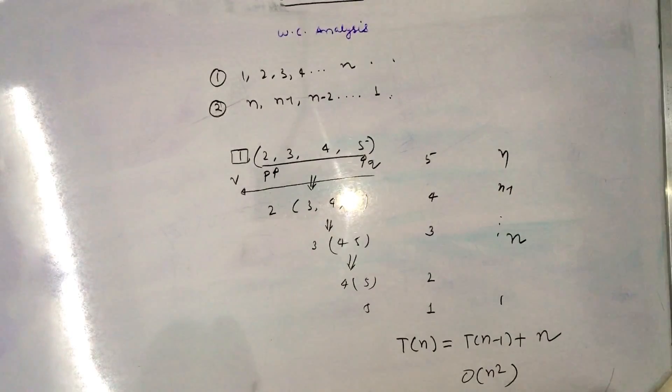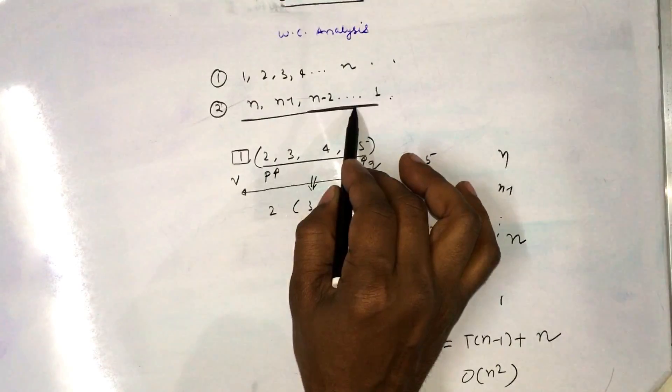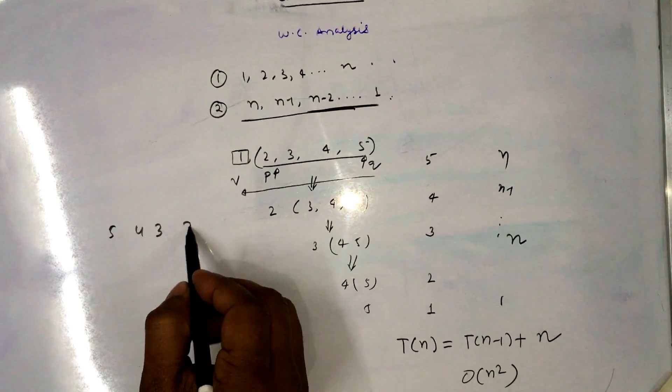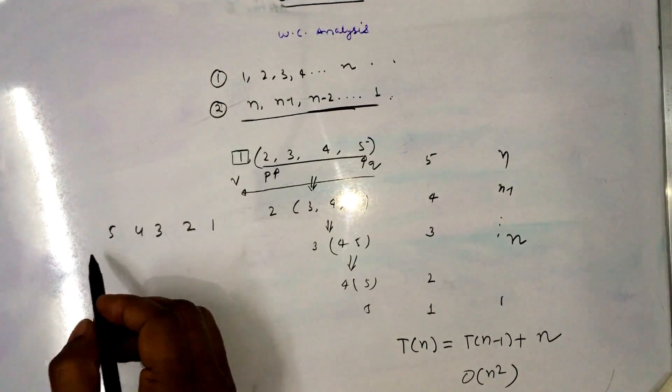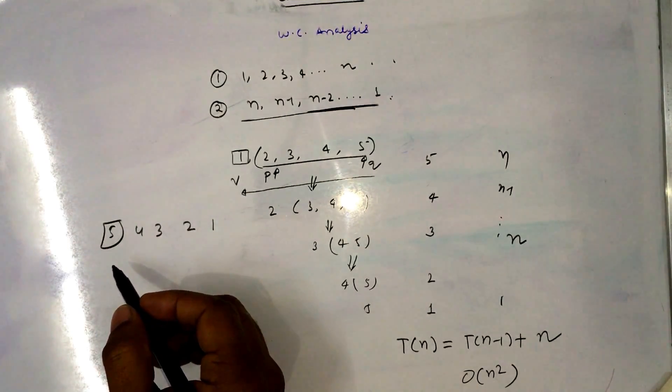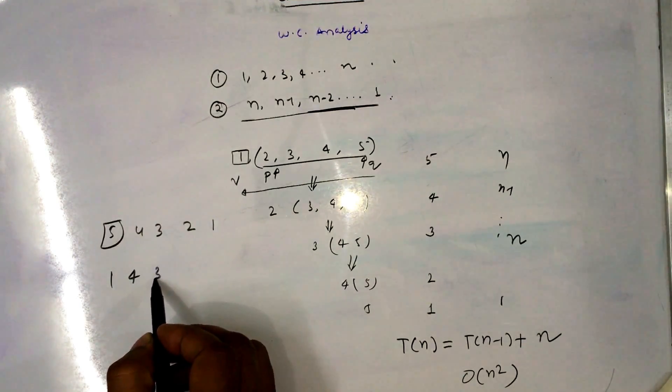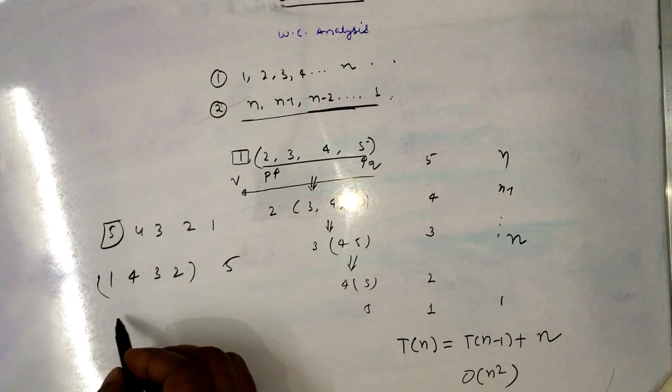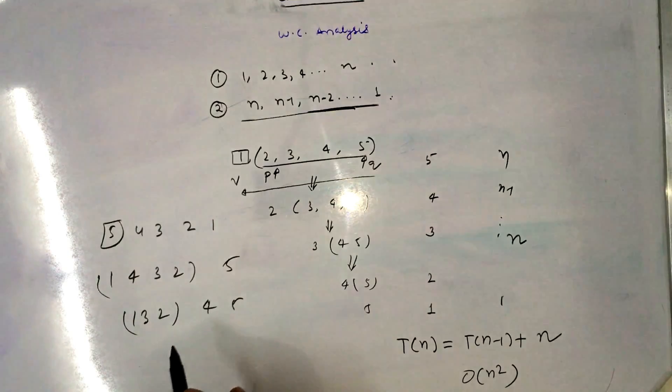So if I talk about the reverse sorted array, then the idea is same. The array is given as 5, 4, 3, 2, 1. And if I consider this as a pivot element, and the sorted sequence would be like 1, 4, 3, 2 is either side and 5 is another one. Then again in the next pass, 1, 3, 2, 4, 5. So this is the sorted next sub problem and next sub problem.